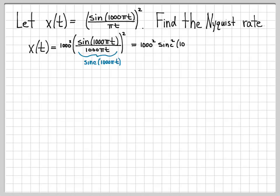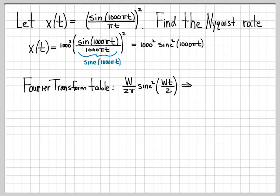Now what I have is x(t) is a thousand squared sinc squared of a thousand pi t. The reason I like this is because now x(t) is written in a form that I can really easily look up in a Fourier transform table. I go to my Fourier transform table and I have a pair that says capital W over two pi sinc squared of Wt over two in the time domain has a frequency domain representation of a triangle function omega over two W. Now I need to manipulate my x(t) into this form from the table.